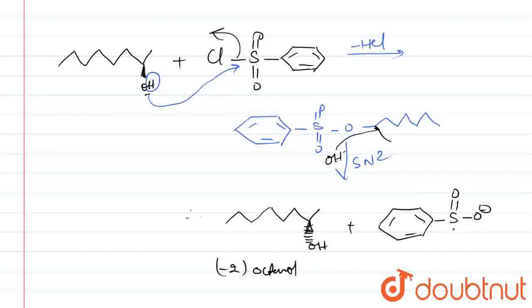So here it is O minus, and this should be double bond O. So this is our required product after SN2. Thank you.